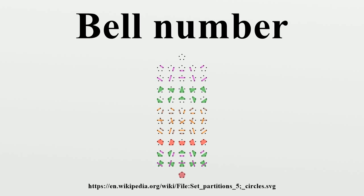Bell primes are Bell numbers that are also prime. Known Bell primes correspond to indices 2, 3, 7, 13, 42, and 55. The next Bell prime is B2841, which is approximately 9.307 × 10^6538. As of 2006, it is the largest known prime Bell number. Phil Carmody showed it was a probable prime in 2002, and after 17 months of computation with Marcel Martin's ECPP program Primo, Ignacio Laro de Canestro proved it to be prime in 2004. He ruled out any other possible primes below B6000, later extended to B30447 by Eric Weisstein.